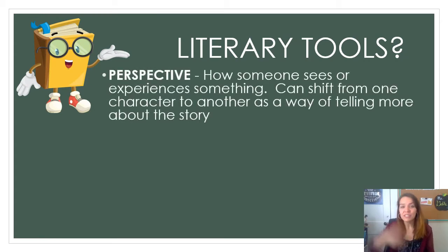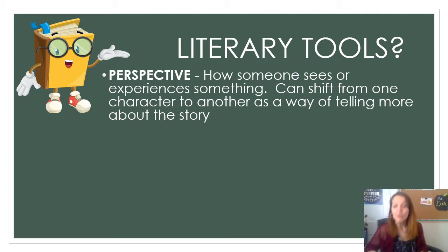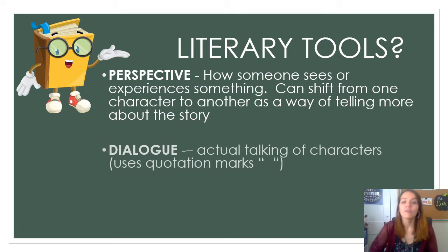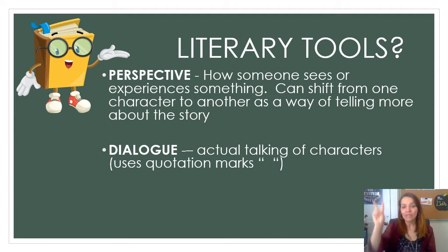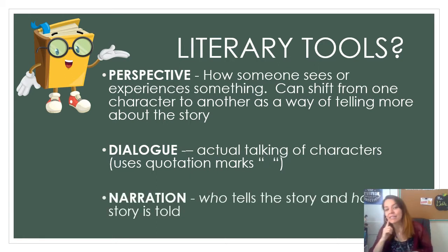We've also discussed perspective, which is how someone sees or experiences something. If you're looking from one point of view at a number on the floor, you might say it's six, or you could say it's nine, based on the way you are seeing it. Perspective can shift from one character to another and tells how they view the events of the story. We've also discussed dialogue — the actual words the characters are using — you would see quotation marks around their dialogue. And narration: who tells the story and how the story is being told.